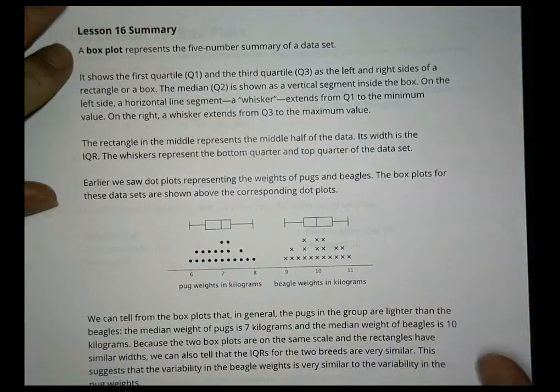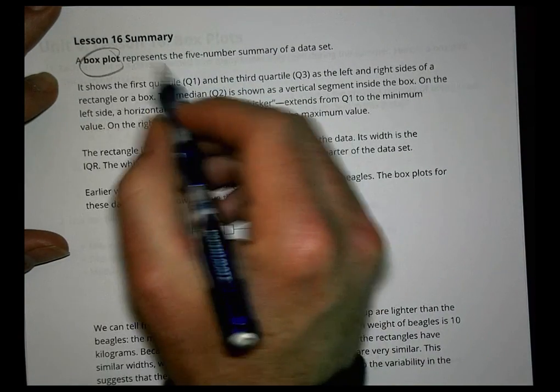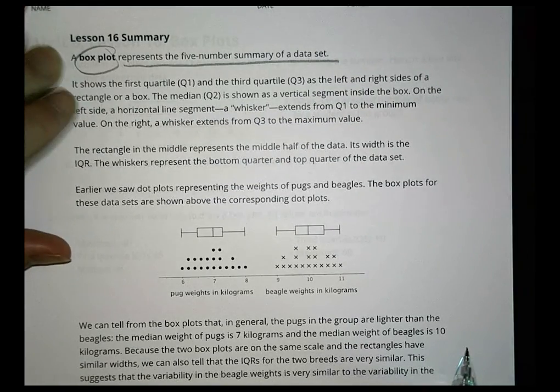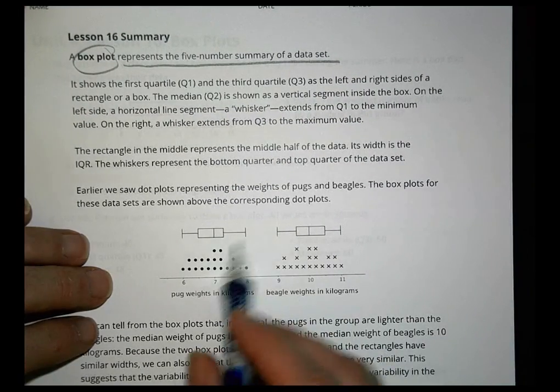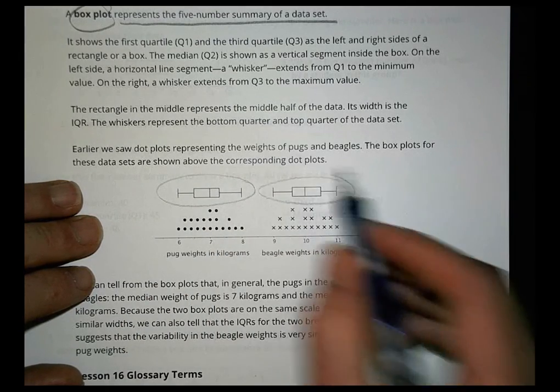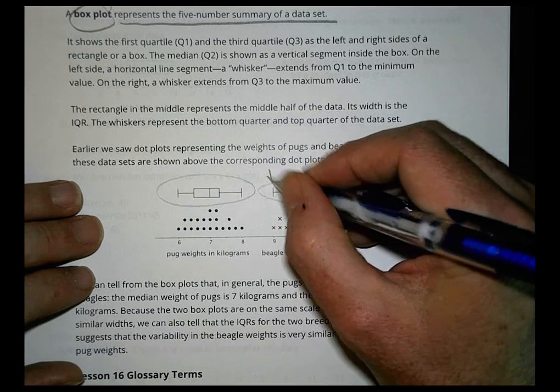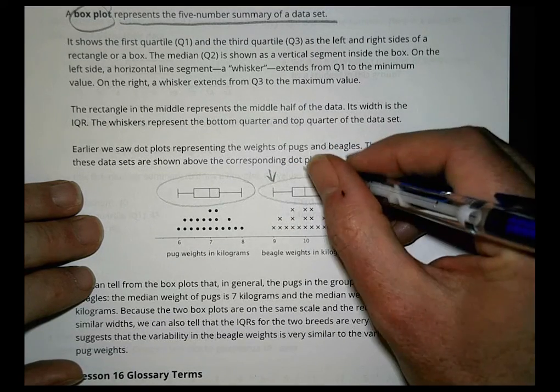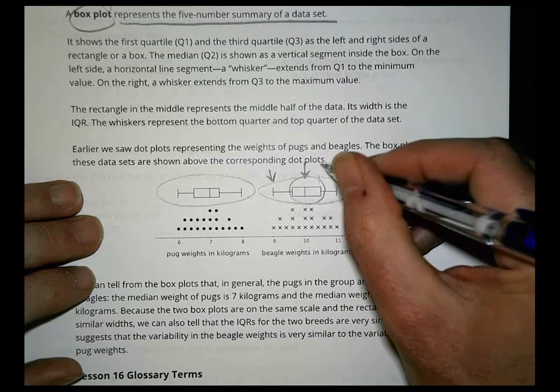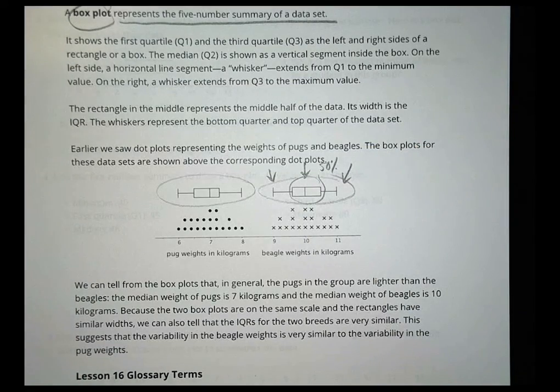So the box plot represents the five number summary of a data set. That's all that it is. It's a way of showing visually the five number summary. You know where the minimum is, the maximum is, and of course you can tell where the median is quite simply enough. And you know that the numbers in that box represent 50% of all the data points in your dot plot. I'm going to pause there and let you work on homework.